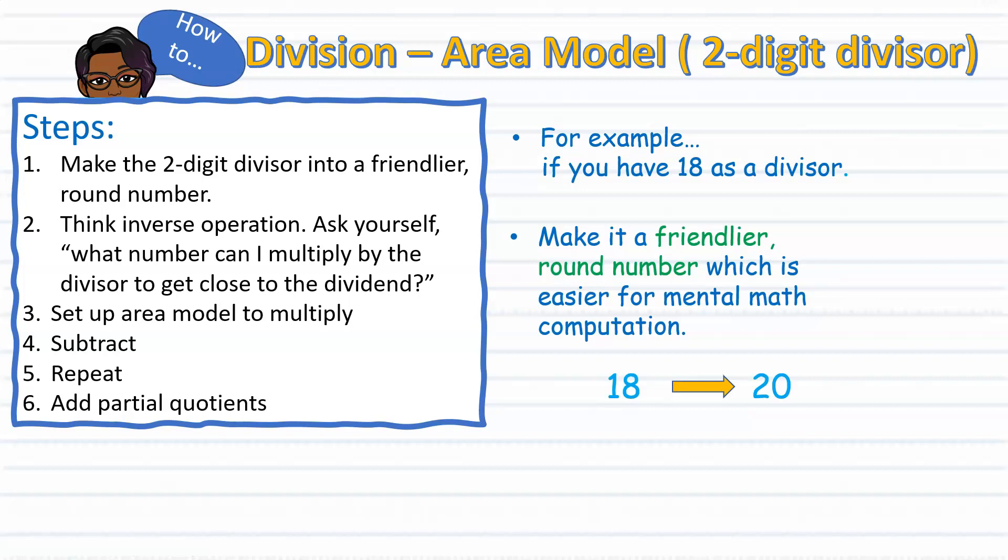With step two, we'll be using some inverse operation, that's multiplication. And although we're dividing, we'll see how multiplication is essential in understanding how to divide. Step three, we'll be setting up our area model. Four, subtracting. Step five, we'll continue to repeat those steps as necessary. And finally, we will add up our partial quotients to find the answer.